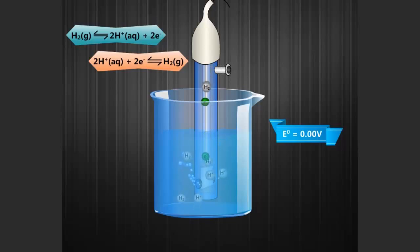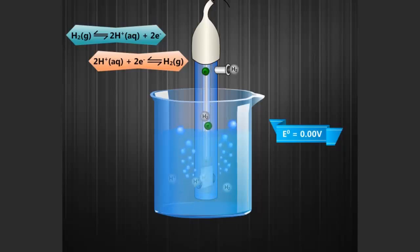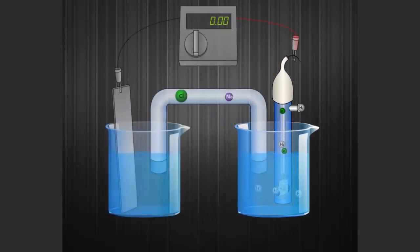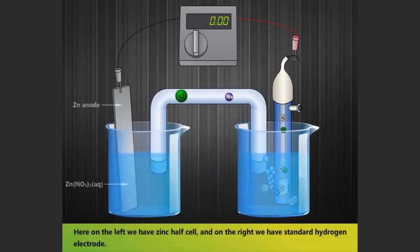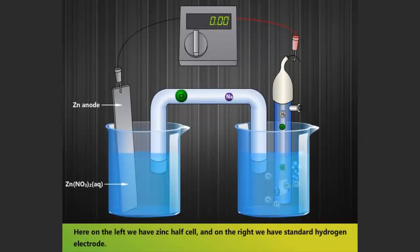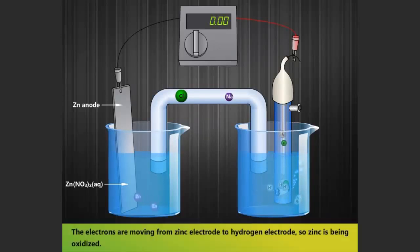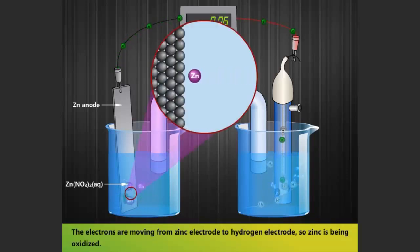As you remember, two half-cells complete a galvanic cell. Let us take a close look. Here on the left, we have a Zinc half-cell, and on the right, we have the Standard Hydrogen Electrode. The electrons are moving from the Zinc electrode to the Hydrogen electrode.